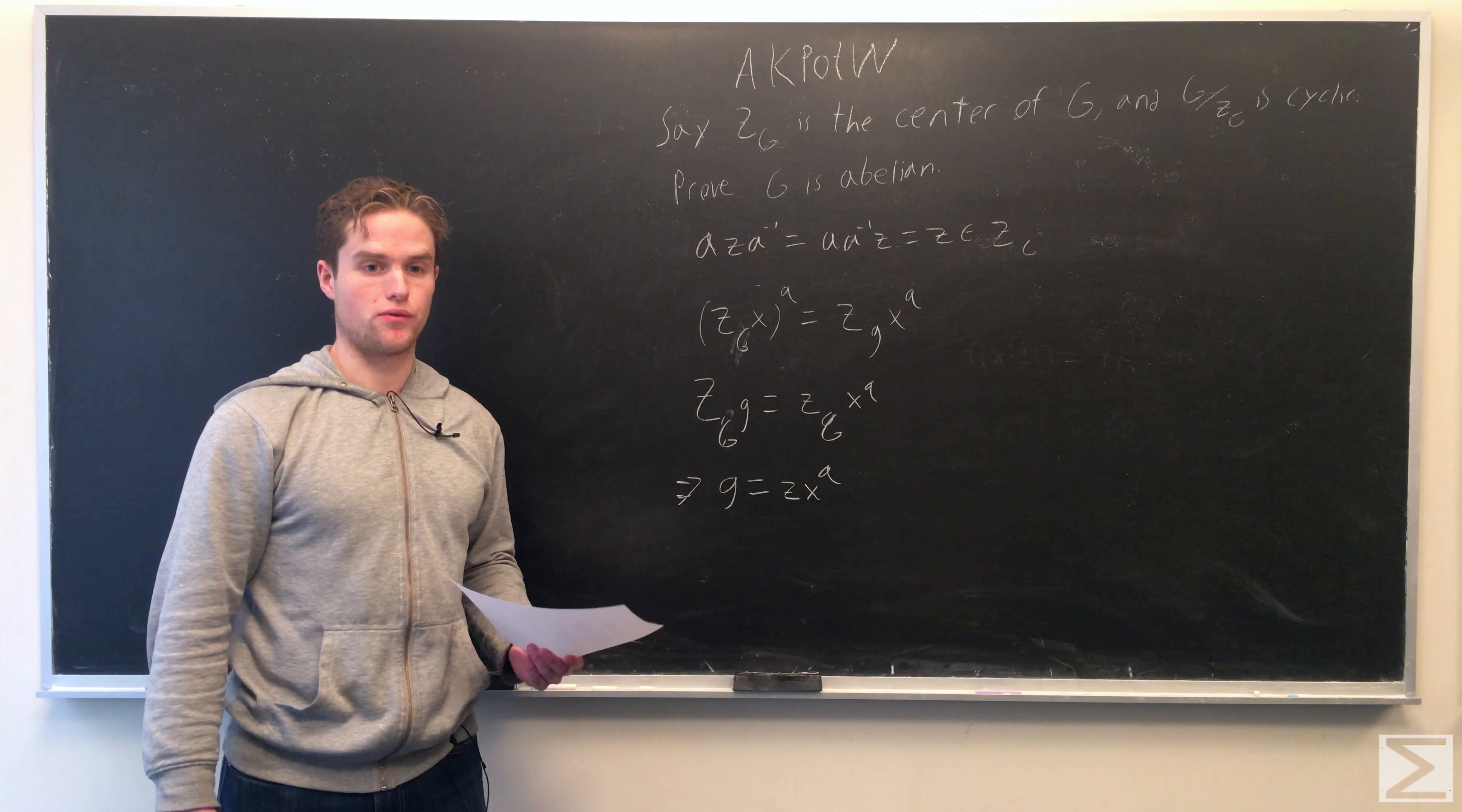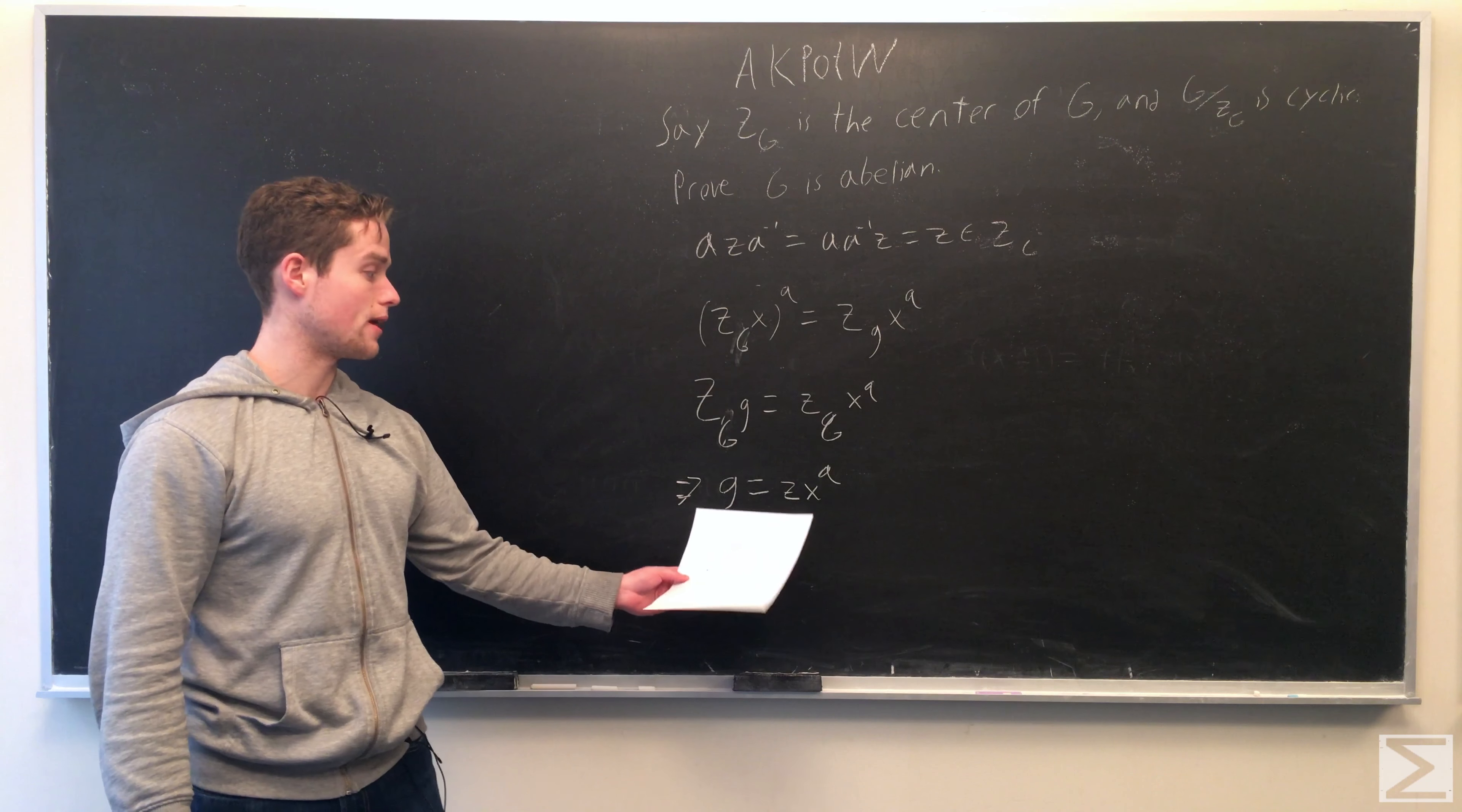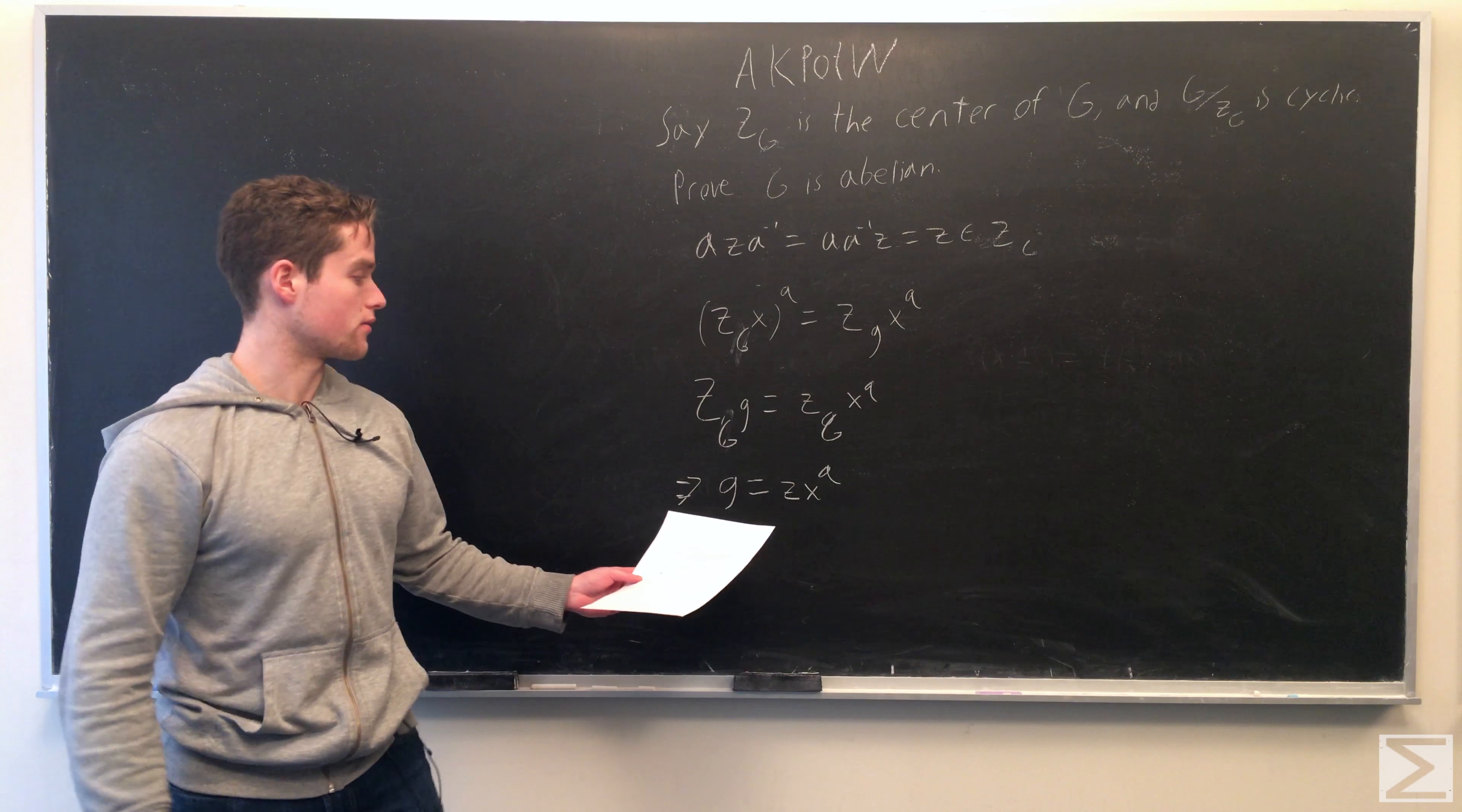And so now we want to prove that G is abelian. And so now that we have this representation of any element in G, we can write...